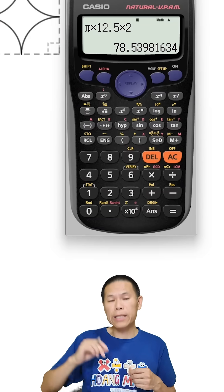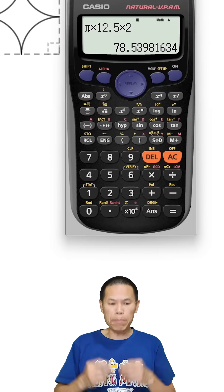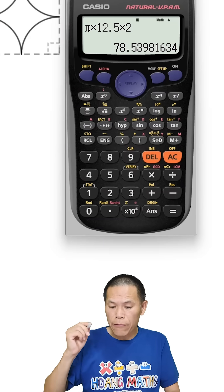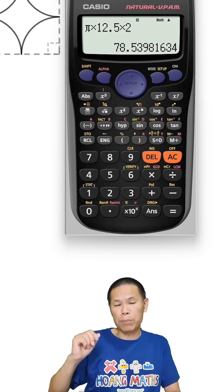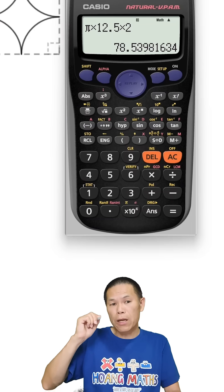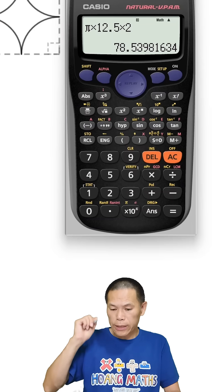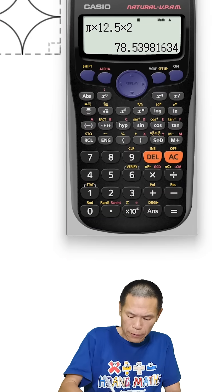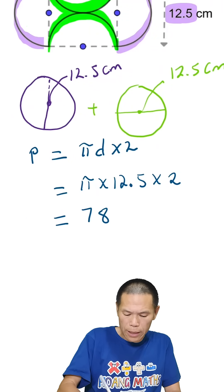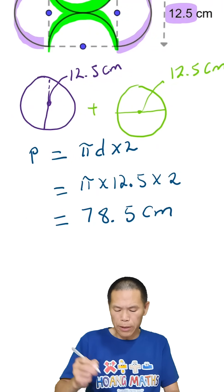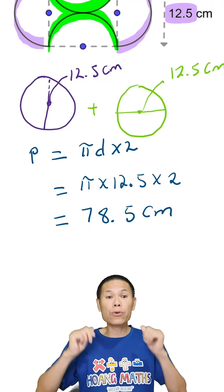So 78.5, because the number after 5 is 3, which is less than 5, so we round to 78.5 centimeters. There you go.